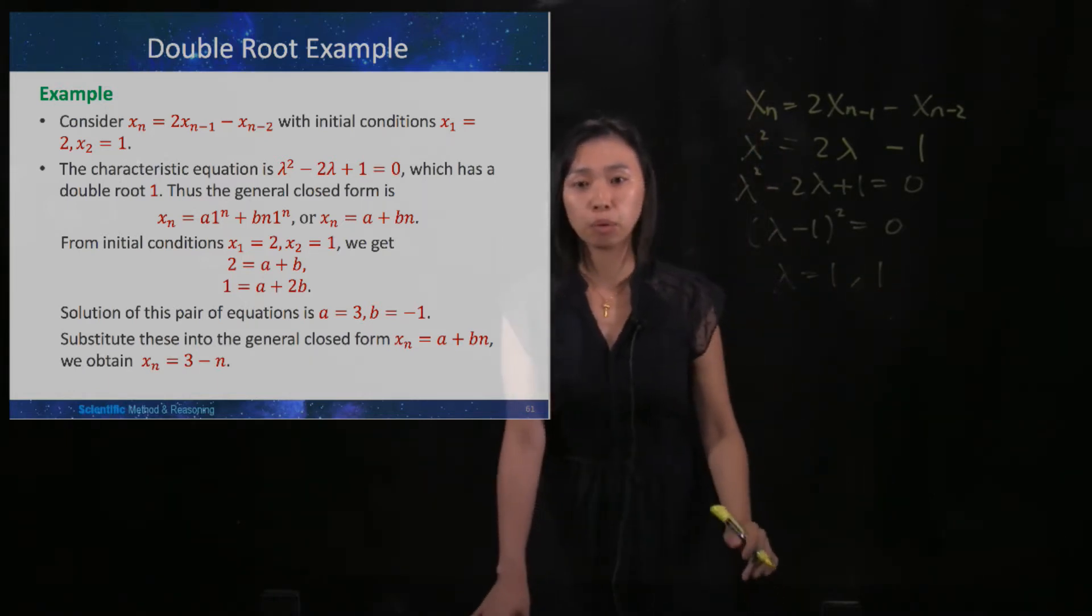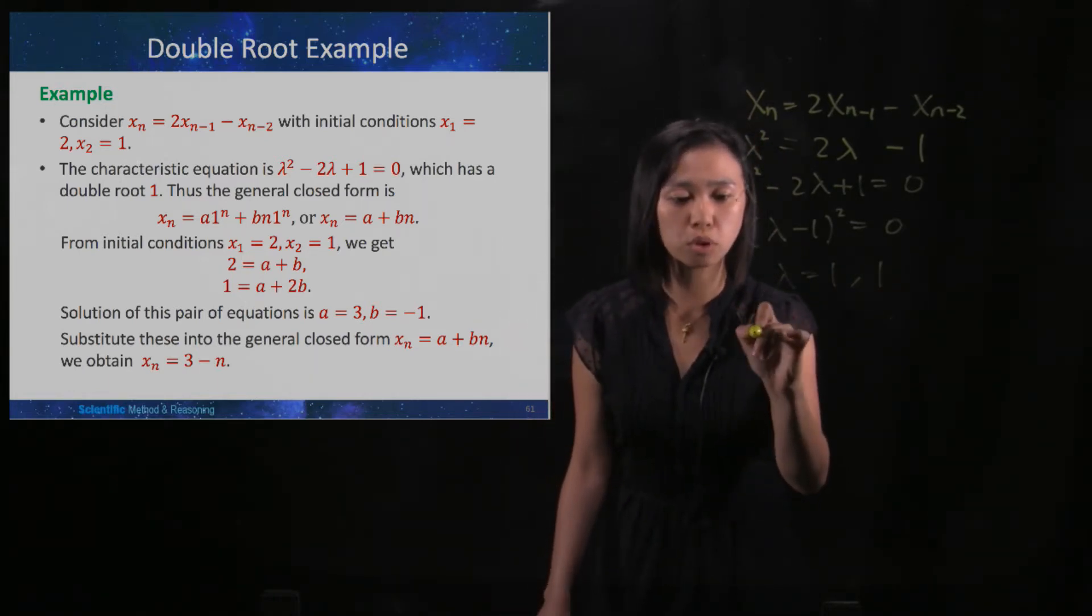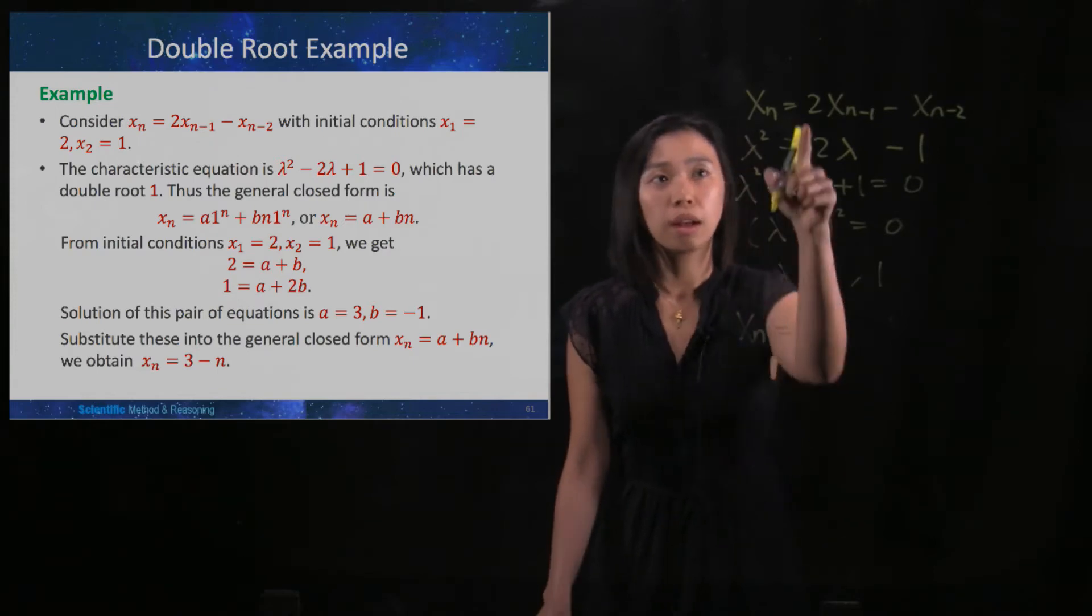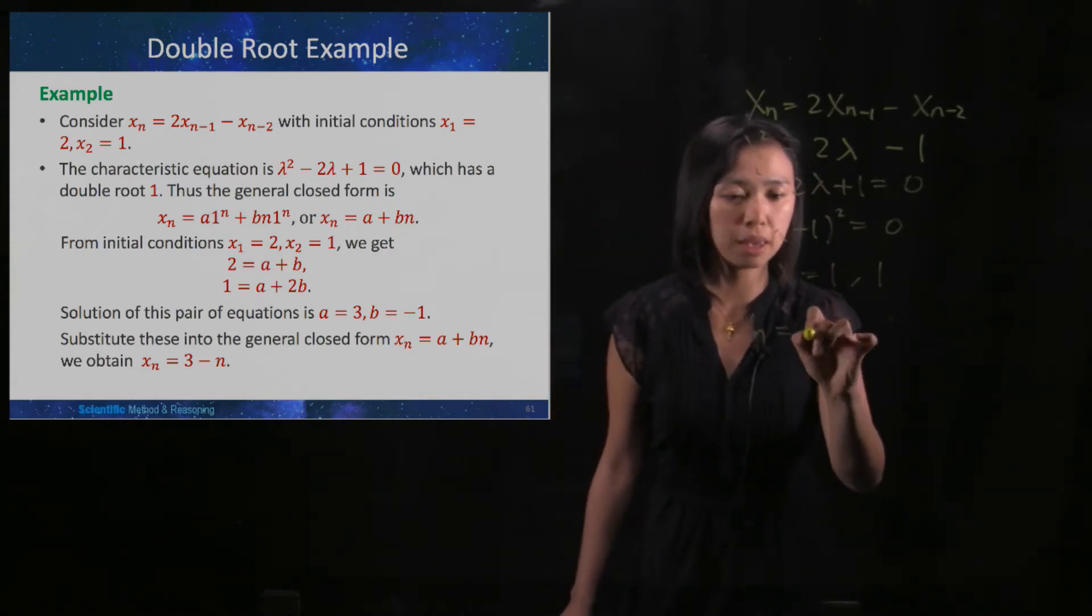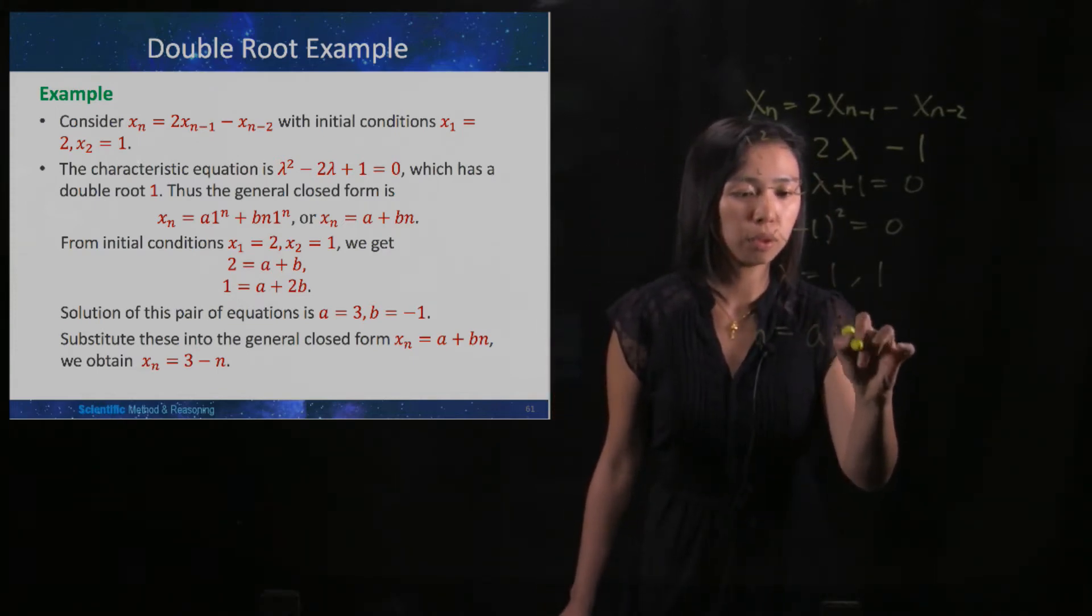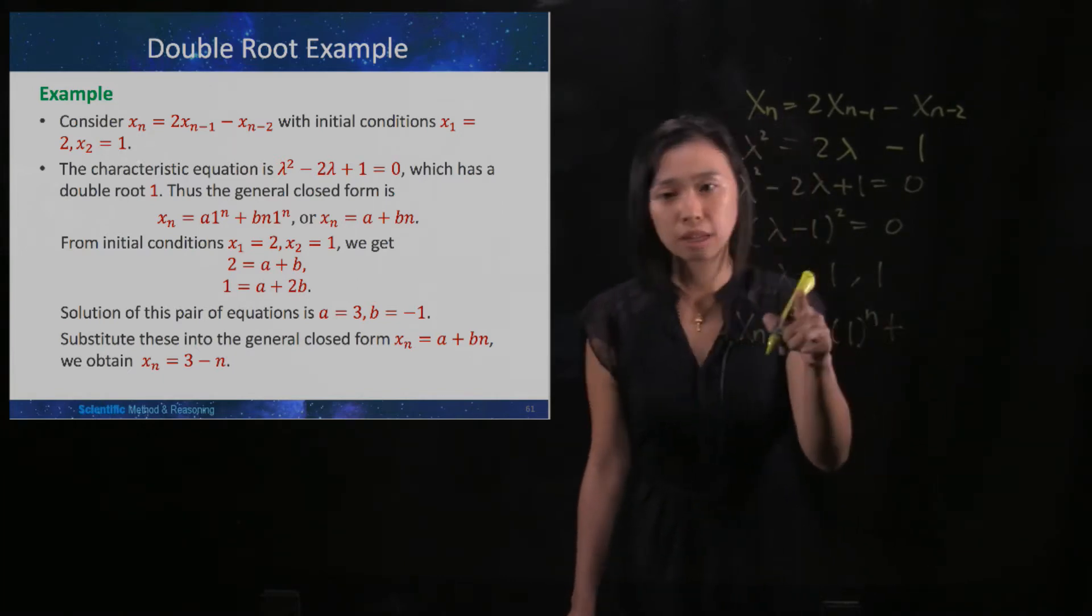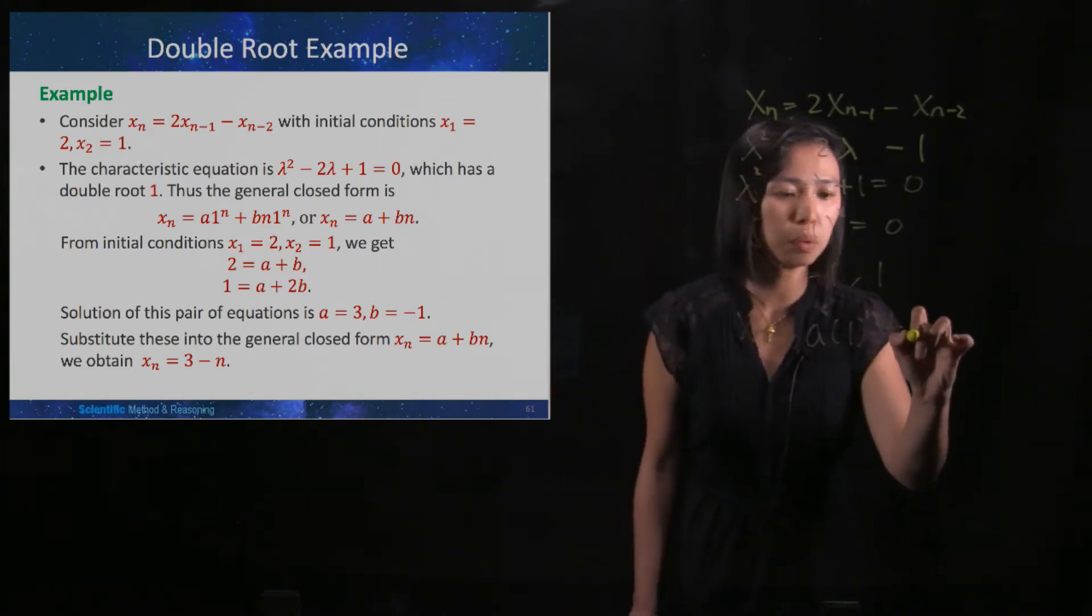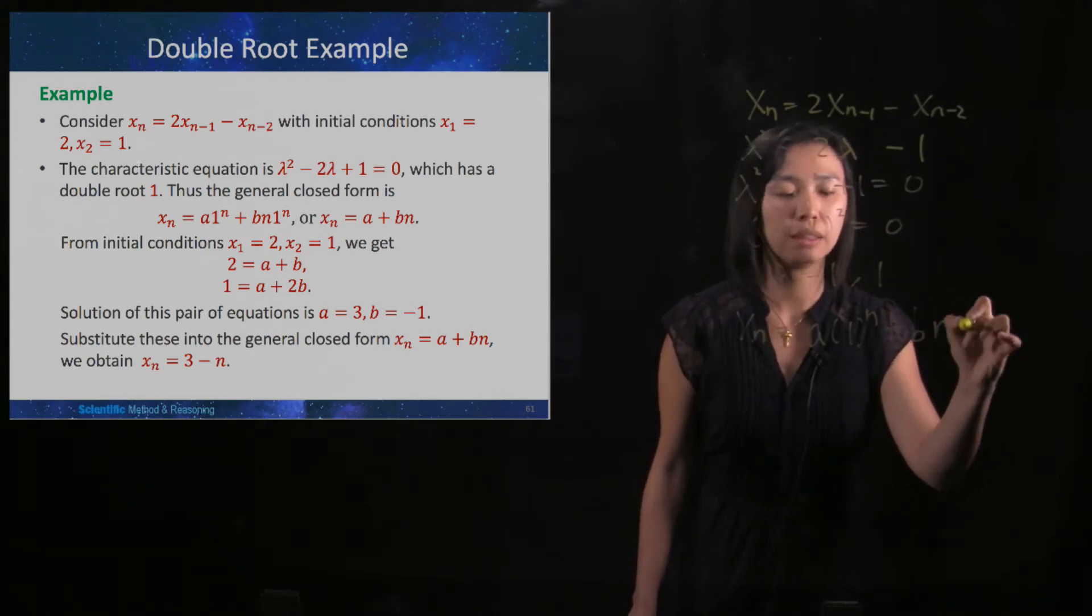Here we got a double root. So the closed-form solution to this difference equation would be a times 1 to the power of n. Plus, since there are double roots, we will have an extra n here.